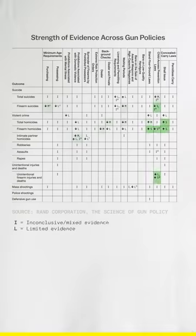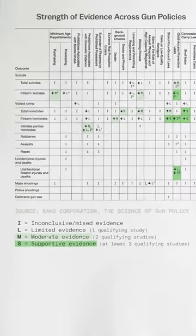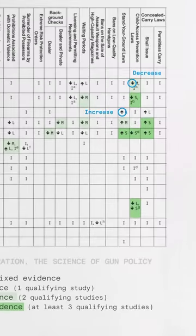I'll highlight the ones with M's and S's. Those mean moderate evidence and supportive evidence, which is the strongest result. And the arrow shows the direction of the effect.